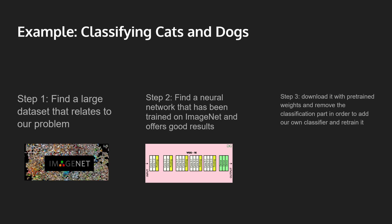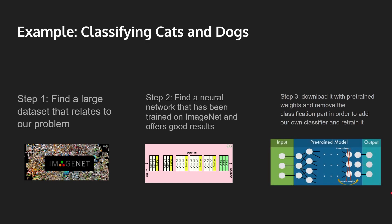The third step is to download the model with pre-trained weights, and then remove the classification part. We'll use our own classifier in order to classify cats and dogs, because ImageNet is trained to classify around a thousand different things — that's why we remove that classifier part and replace it with our own. You can easily download this model from TensorHub. In my next video, I will actually show you how to code this step by step.